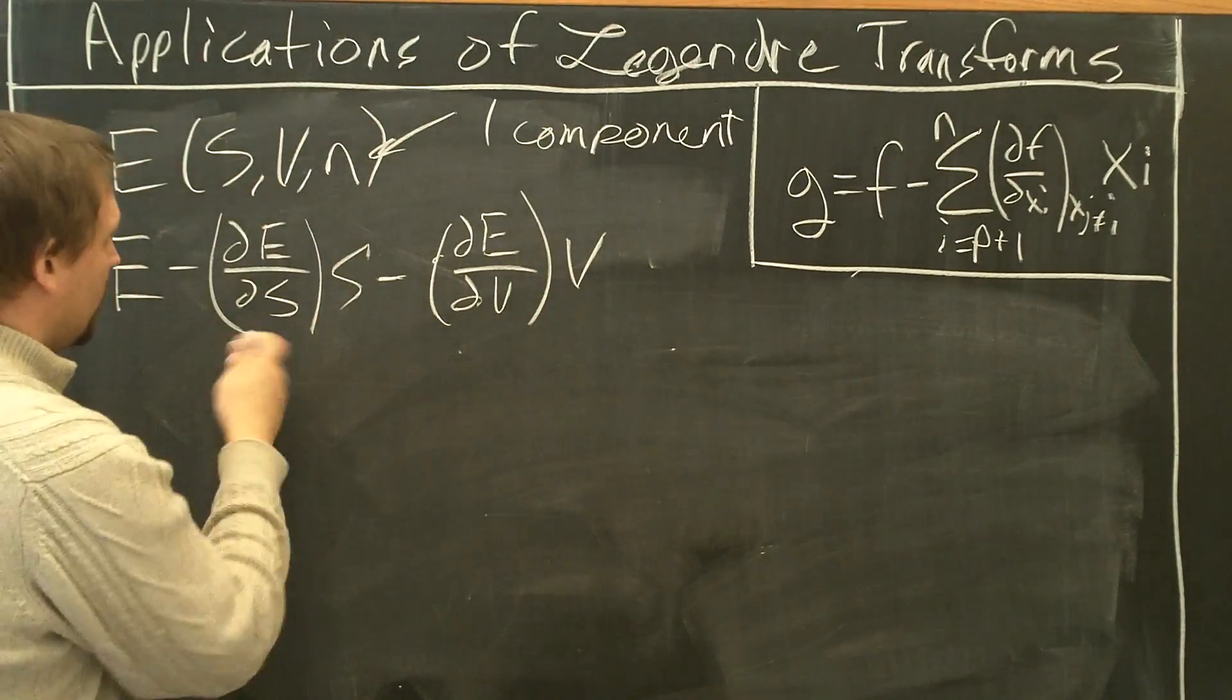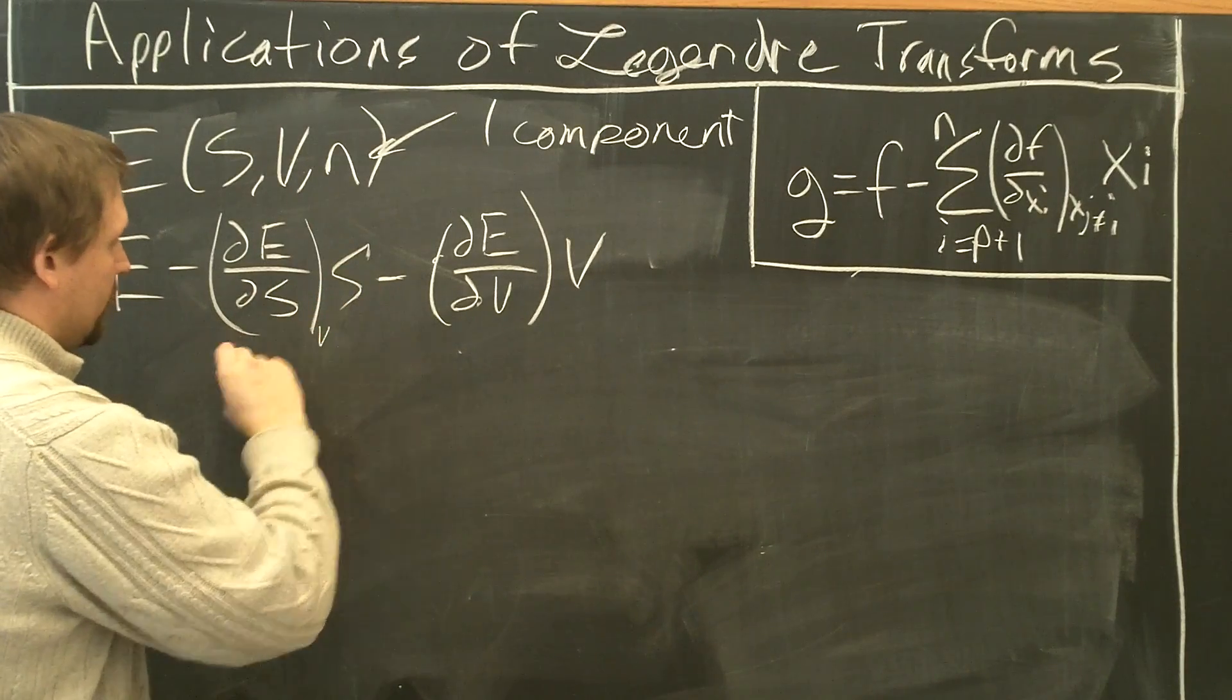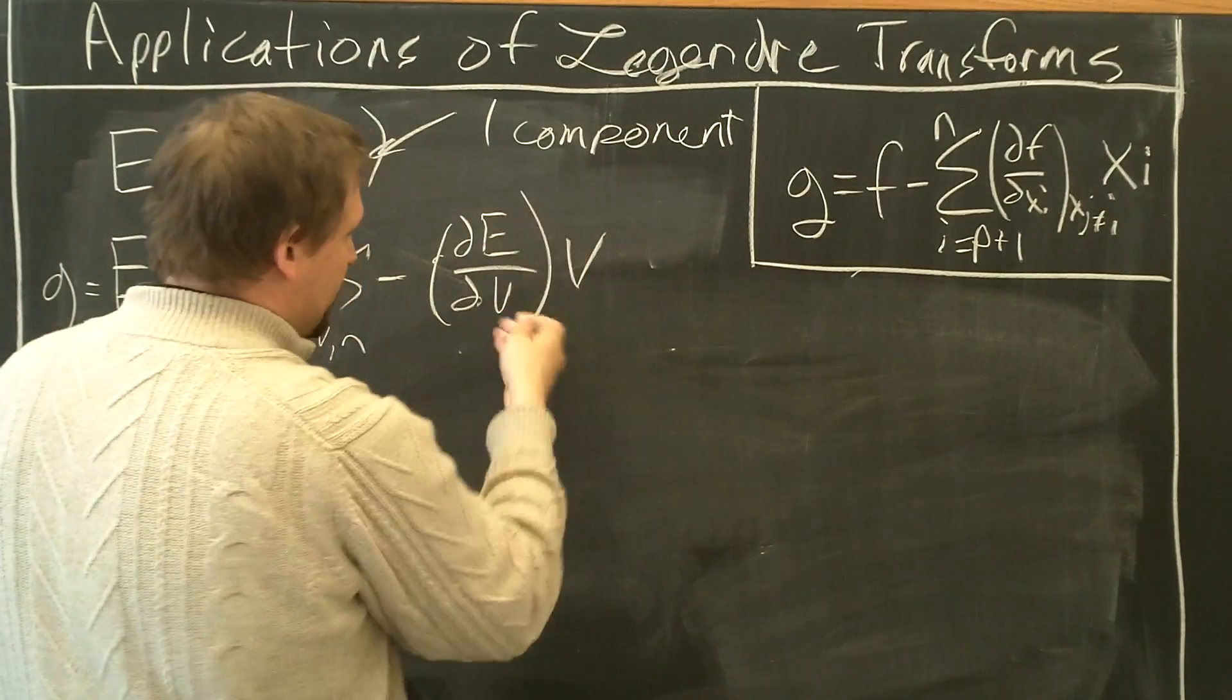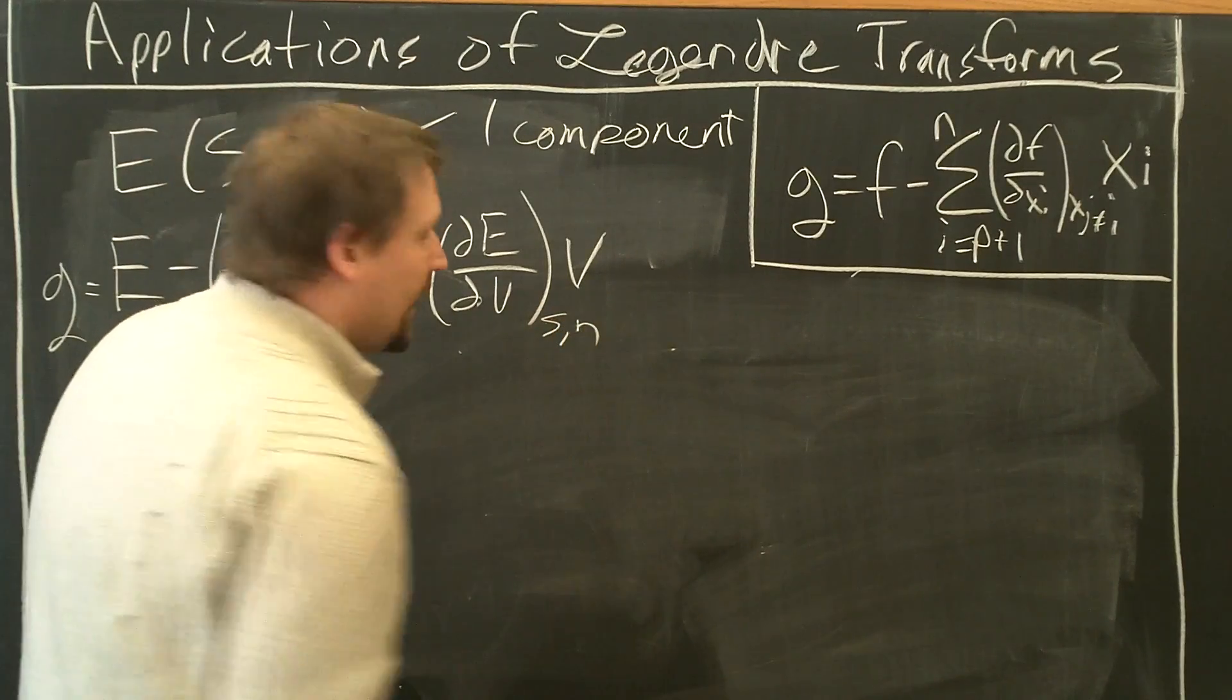And again, we're going to keep the other things fixed when we take these partial derivatives. So when we take them with respect to S, V and N are constant. With respect to V, then in this instance, S and N are constant.